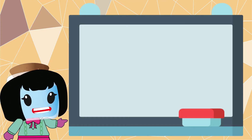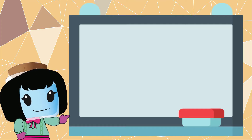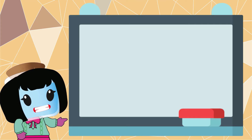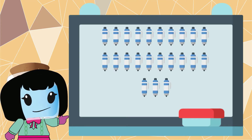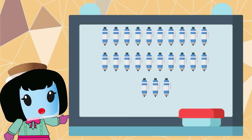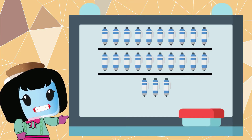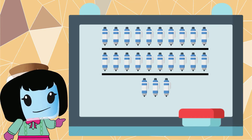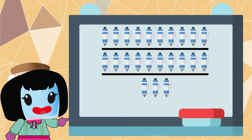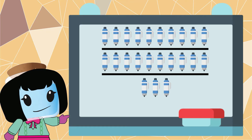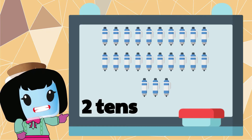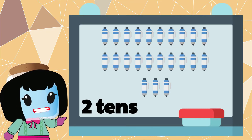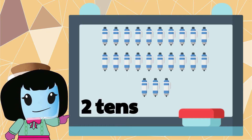Let's move on to slightly bigger numbers. How many pins do you see? Notice that the first two lines have 10 pins each. Two tens is equal to 20.